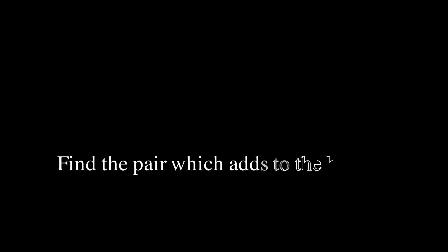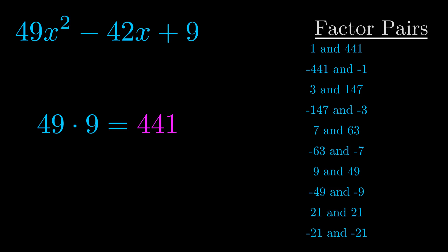The b value is the coefficient on the x term. That's the middle term, the one that we haven't done anything with yet. And really this is the only factor pair that we need.